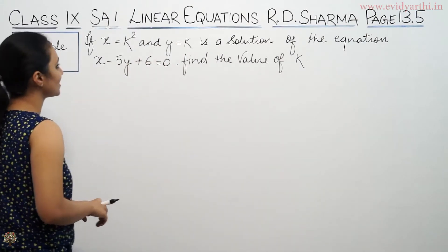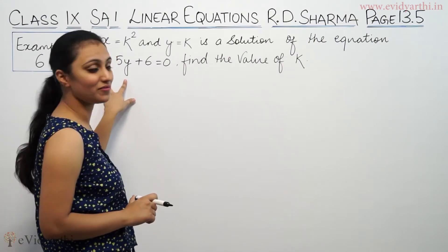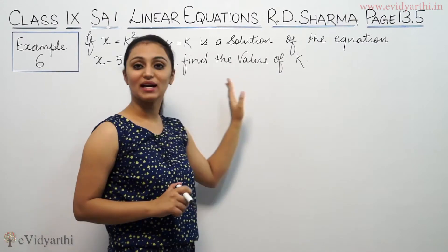This says if x equals k squared and y equals k is a solution of the equation x minus 5y plus 6 equals 0, find the value of k.